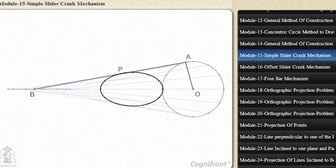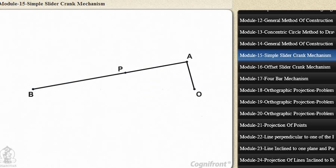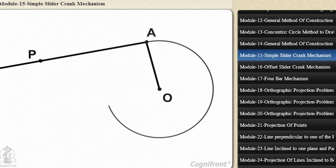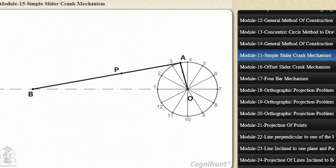The curve obtained is known as a coupler curve. Let's see the stepwise procedure to draw this path. First, draw a circle which is the path of point A. Then, divide the circle into 12 equal parts. From the center of the circle O, draw a center line which passes through the end point B of the rod.